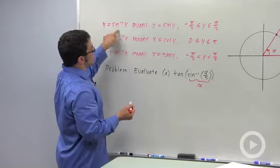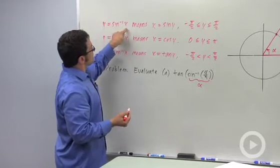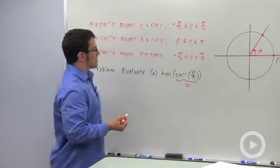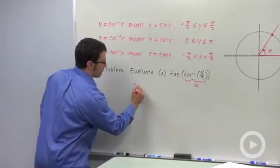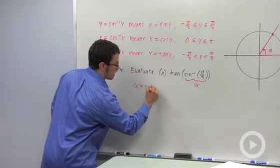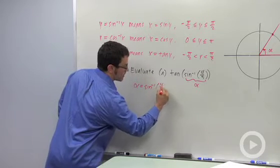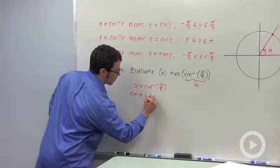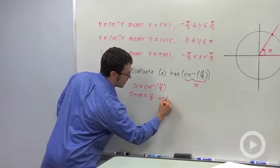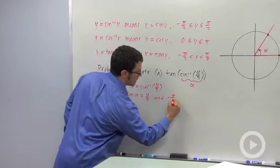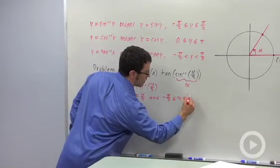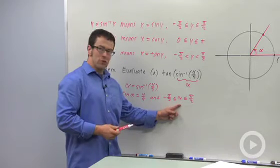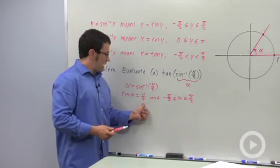Remember the definition of inverse sine. y equals inverse sine of x means x equals sine y for y between negative pi over 2 and pi over 2. So alpha equals inverse sine of 4 fifths means sine of alpha equals 4 fifths. And alpha is between negative pi over 2 and pi over 2. And that suggests that alpha is going to be in the first quadrant because we have a positive value.